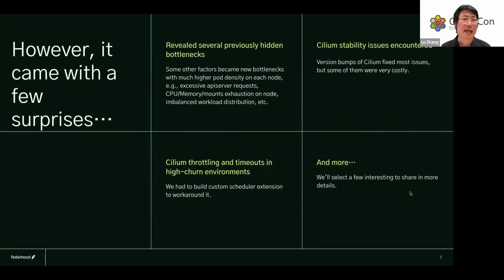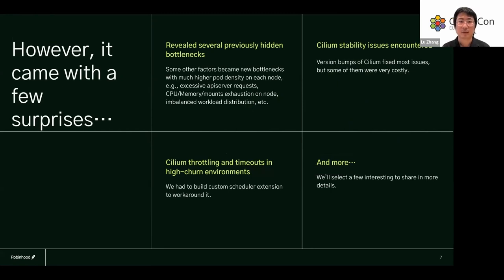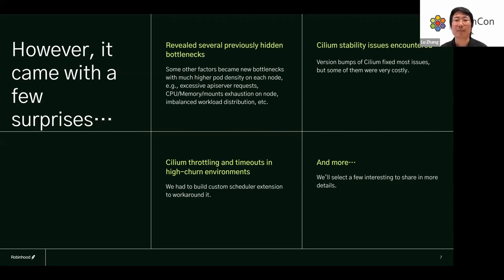As Madhu mentioned, this migration came with a few surprises. It revealed several previously hidden bottlenecks, because some other factors became new bottlenecks with much higher pod density on each node — such as excessive API server requests, CPU, memory, and inode exhaustion on the node, and imbalanced workload distribution that made things even worse. We also encountered a few Cilium stability issues.